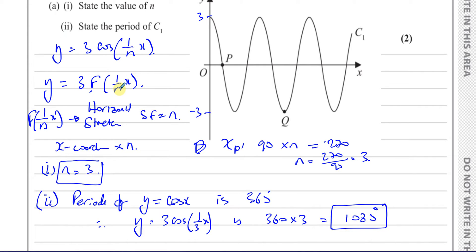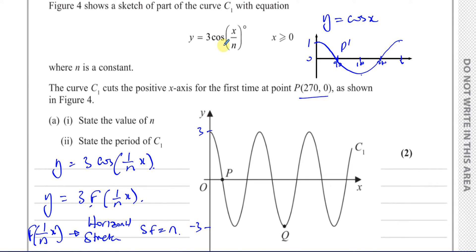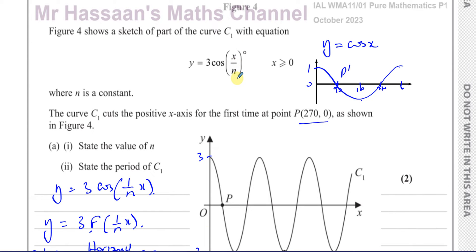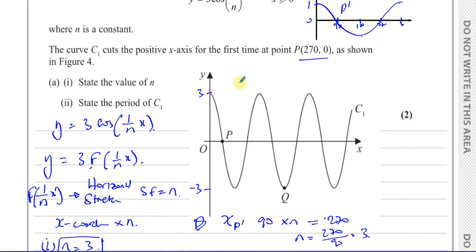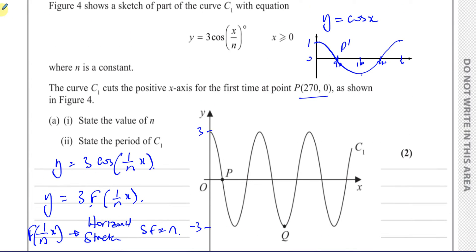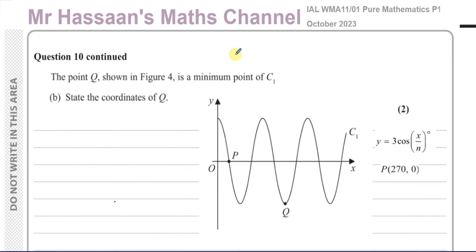Because it's (1/3)x inside the function, that's a horizontal stretch by the reciprocal of one-third, which is 3. So that's part A — pretty simple really, if you know what the original cosine curve looks like.